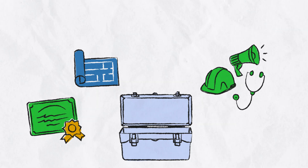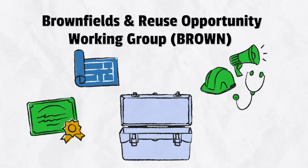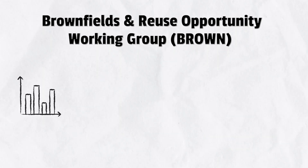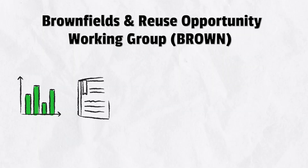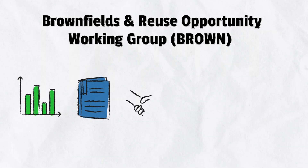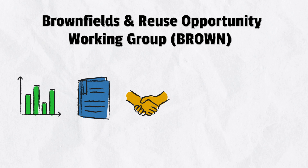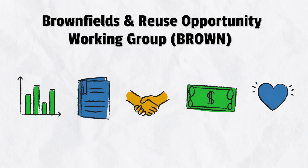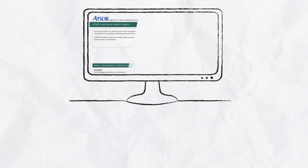Finally, the Land Reuse Program has a group of expert volunteers called the Brownfields and Reuse Opportunity Working Group, or BROWN. BROWN's land reuse experts can help communities solve land reuse problems. For example, BROWN can help communities find and understand information about local land reuse sites and related health risks, develop tailored strategies to improve community health, build sustainable partnerships to support long-term community health improvement through land reuse, and find out about funding opportunities.